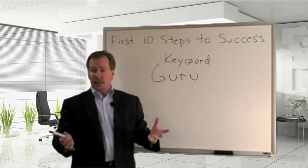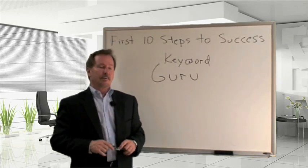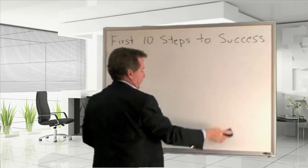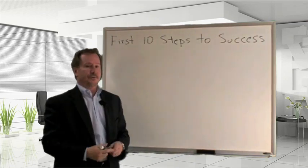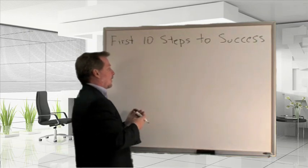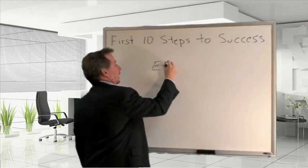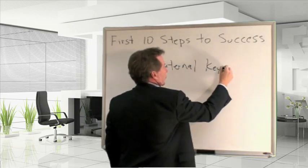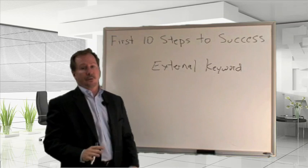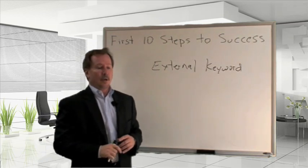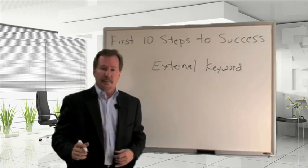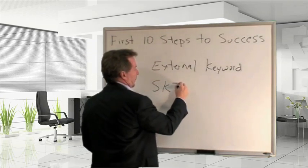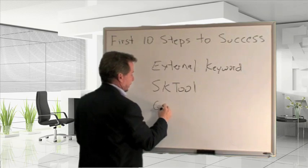Google — everybody knows Google — provides three tools that you can use yourself, without paying anybody, to do some research for your keywords. They have what's called an external keyword tool, which lets you find and locate additional keywords you may not have been thinking about. They also have the SK tool and Google Insights.